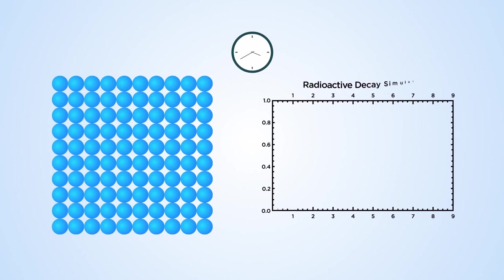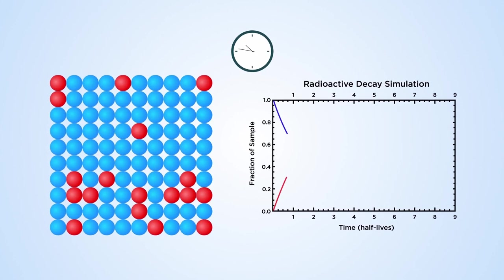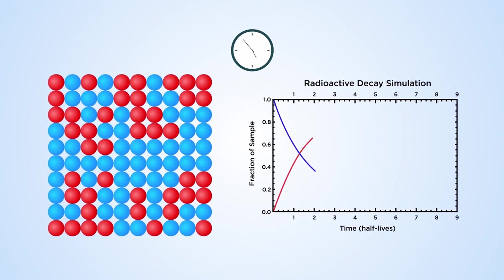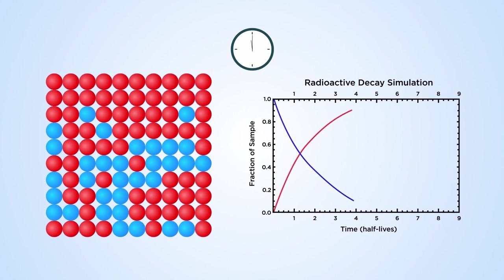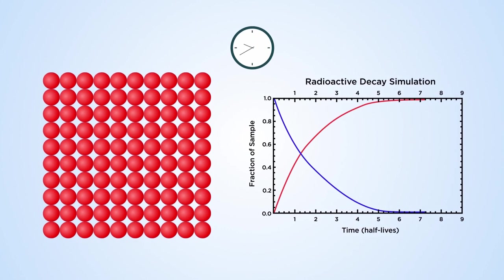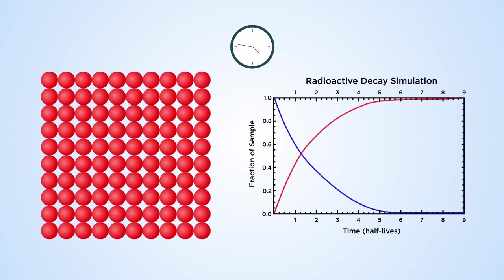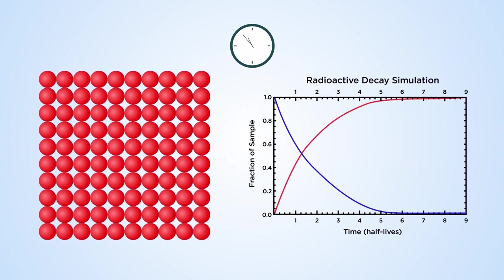When one element decays to another, these are called the parent and the daughter isotopes, respectively. The older the sample, the more parent isotopes have turned into daughter isotopes, so the amount of each changes predictably over time.